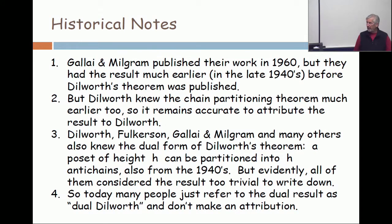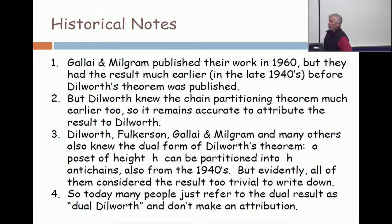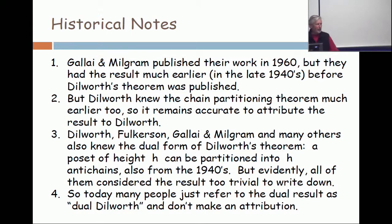I want to comment a little bit here. Dilworth's theorem was published in 1950. Galei and Milgram published their work in 1960. But the Hungarian community has been pretty vocal that Galei actually had this result in the late 40s, and he couldn't convince Milgram to publish it. There are some Hungarians whom I know and respect who think that Dilworth's theorem should be called the Galei-Milgram theorem.